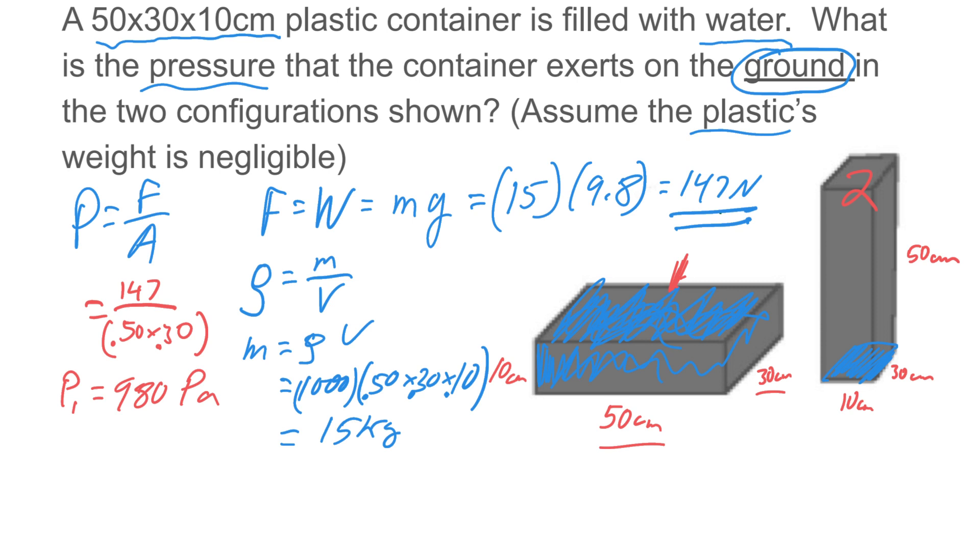We'll do the same for configuration 2. This would be 147 divided by, now the area is different, so this one is 0.1 times 0.3. And for configuration 2 you get 4900 pascals.